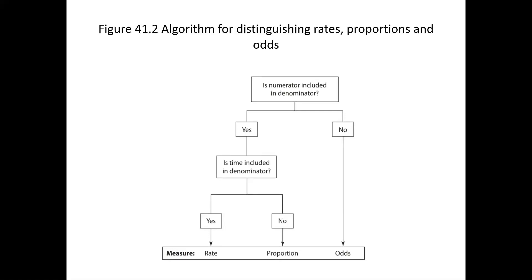This algorithm shows rates, proportions, and odds. If the numerator is included in the denominator and time is not included, it becomes a proportion. If numerator is included in the denominator and time is also included, it becomes a rate. If the numerator is not included in the denominator, it becomes the odds ratio.